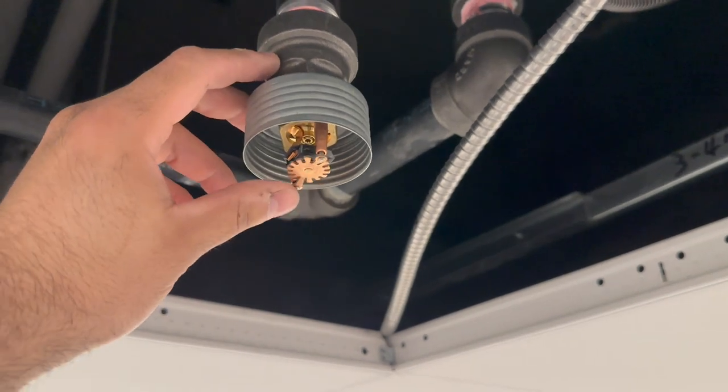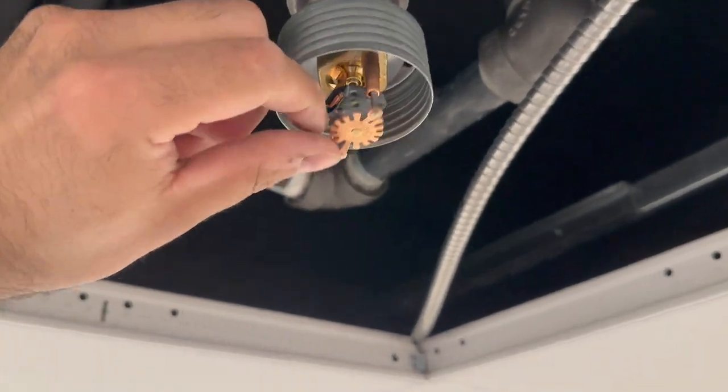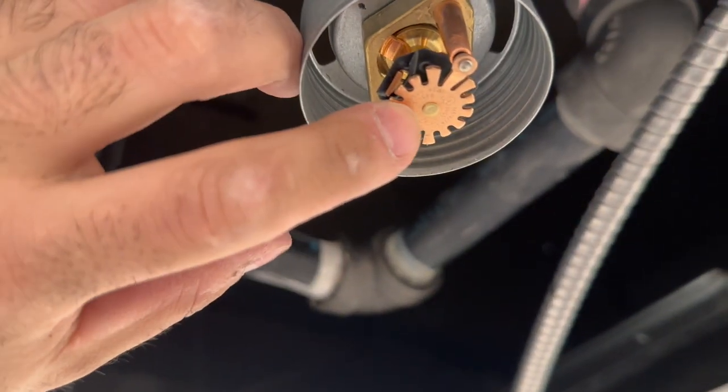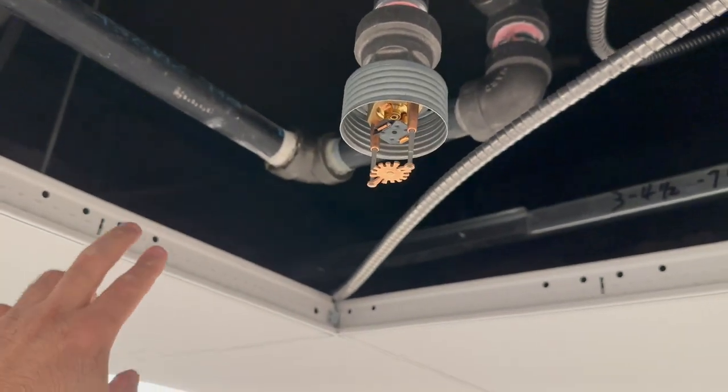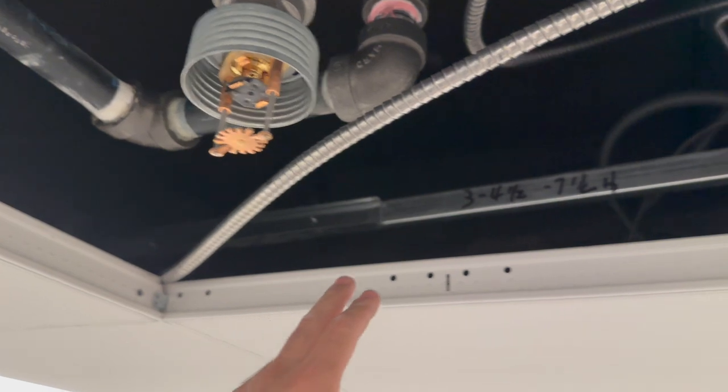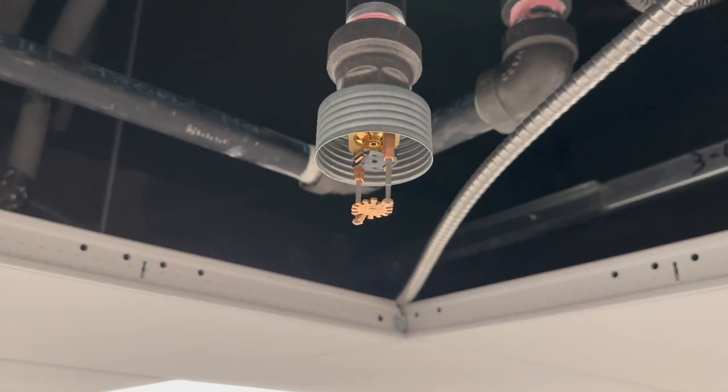Here we have the sprinkler head, and just so that we're all on the same page, that dot right there is going to be the middle of the ceiling tile both from this angle and this angle. The most difficult part of making the hole in the ceiling tile is after measuring from here to the center point.